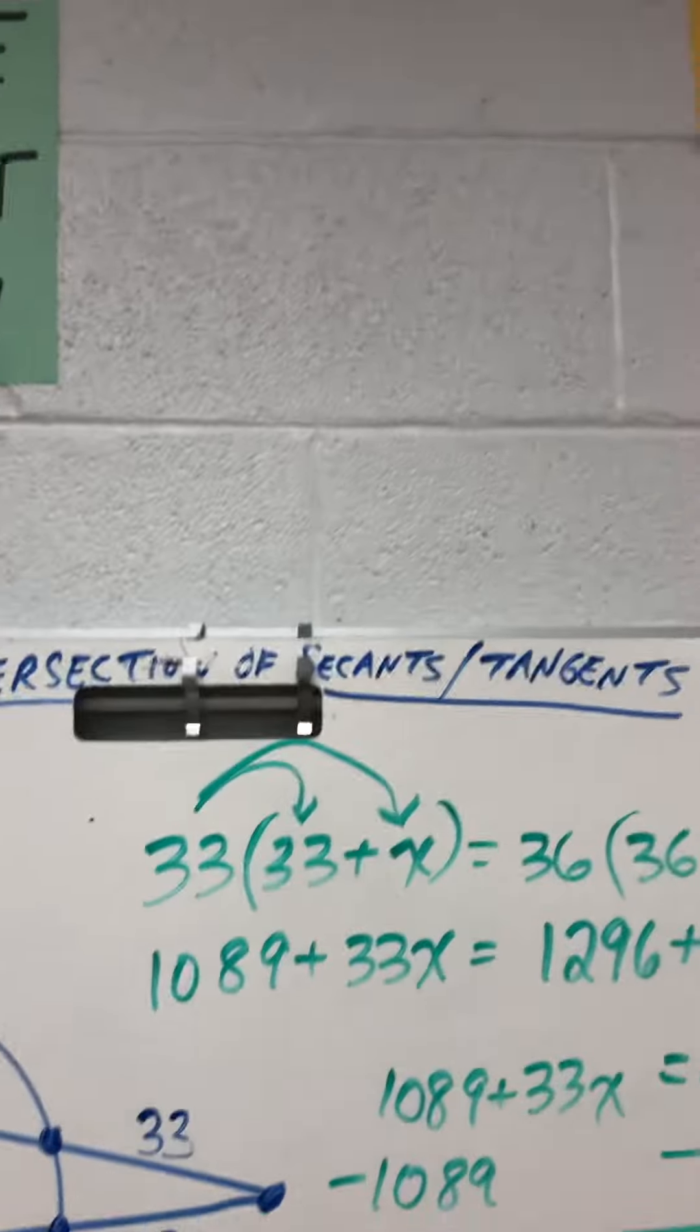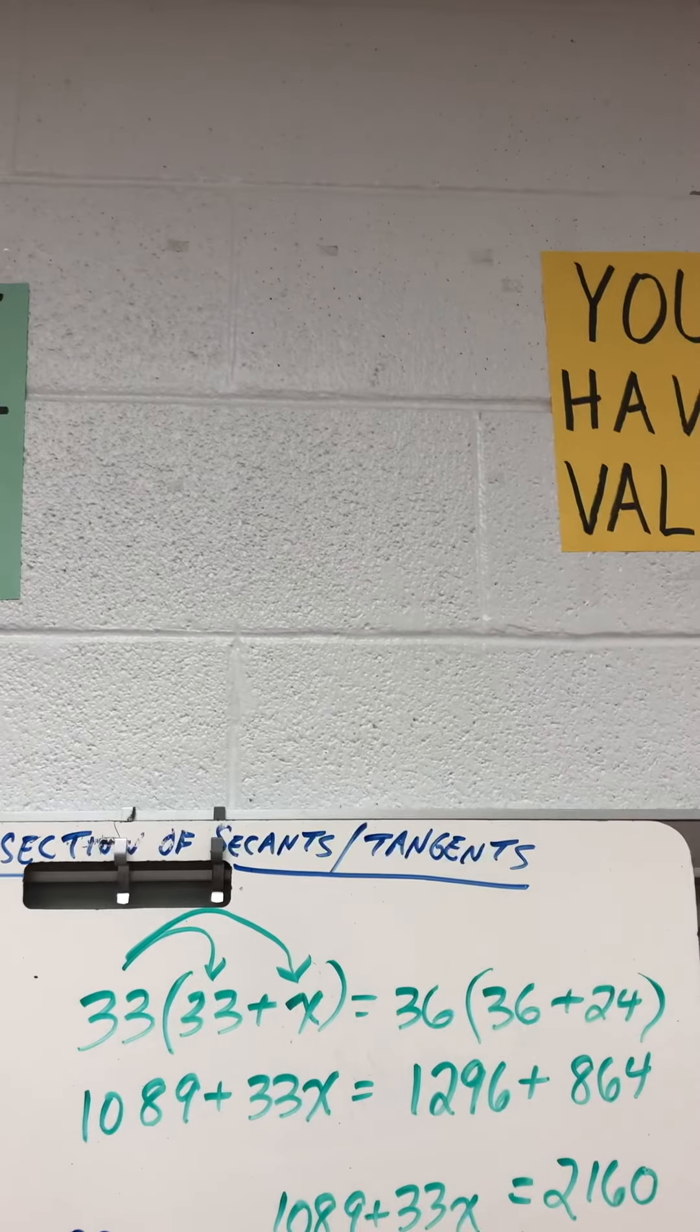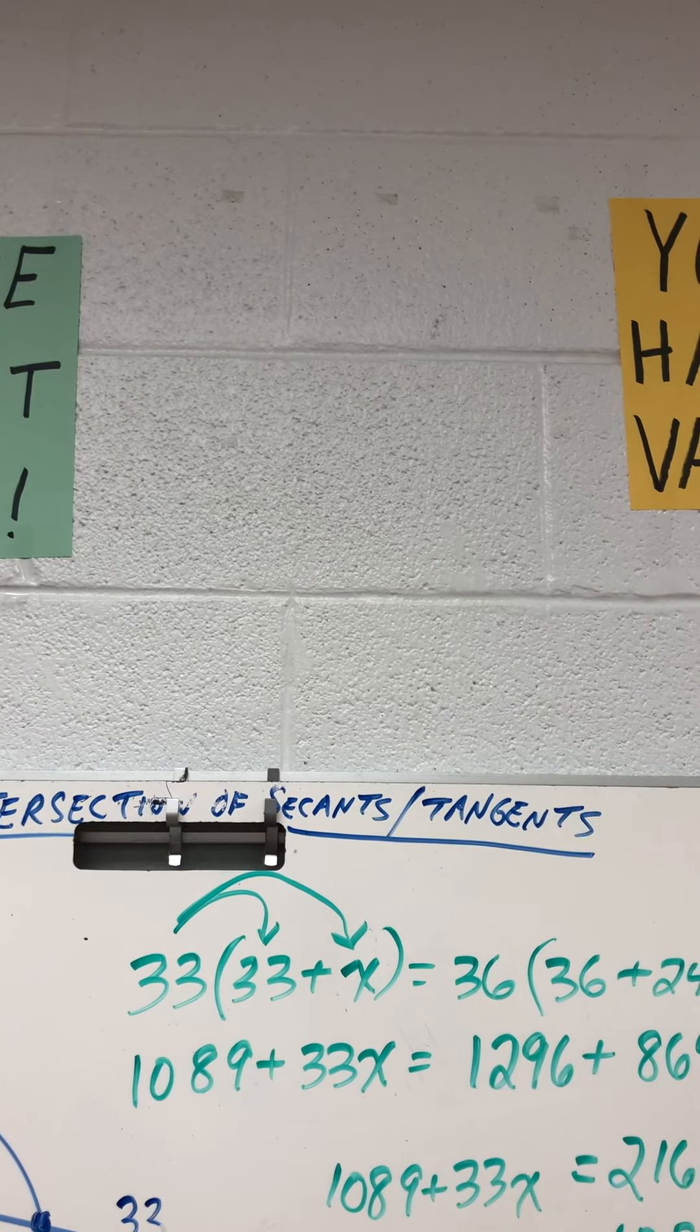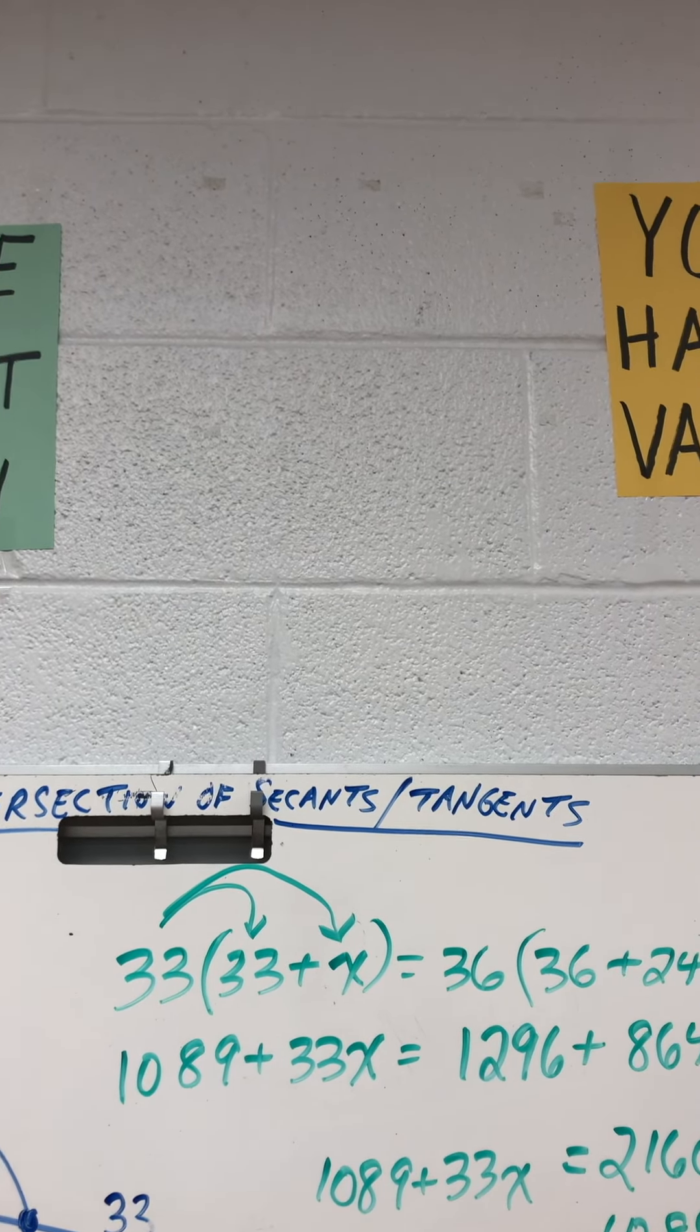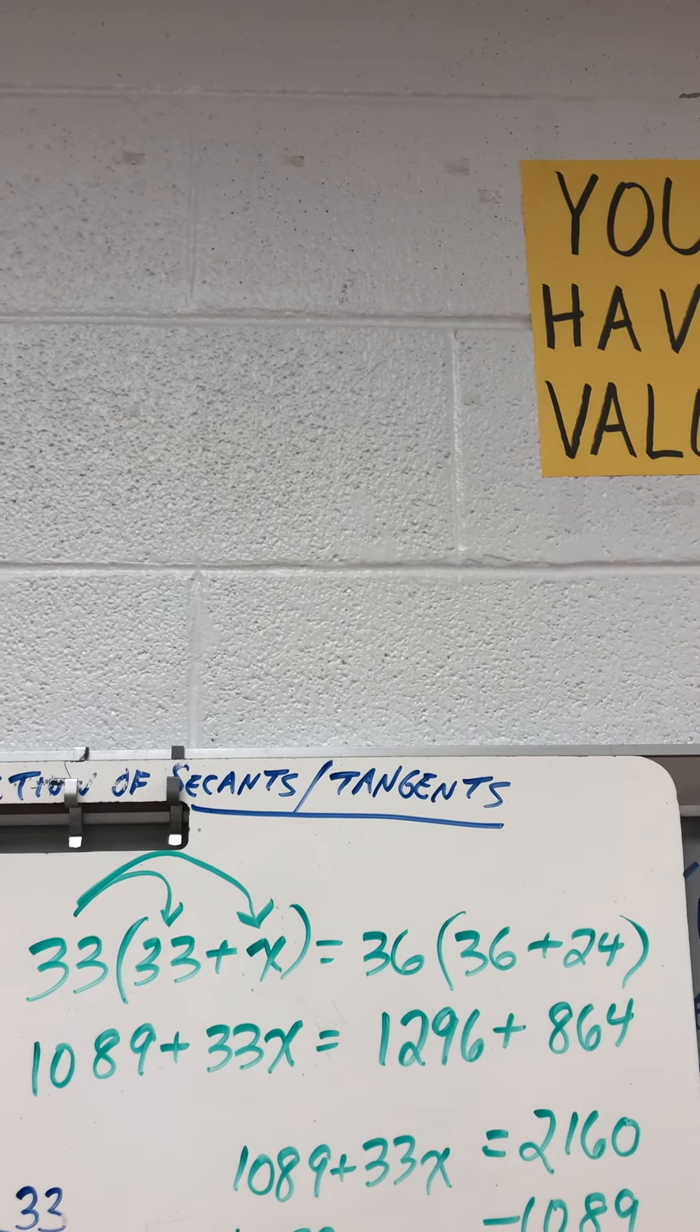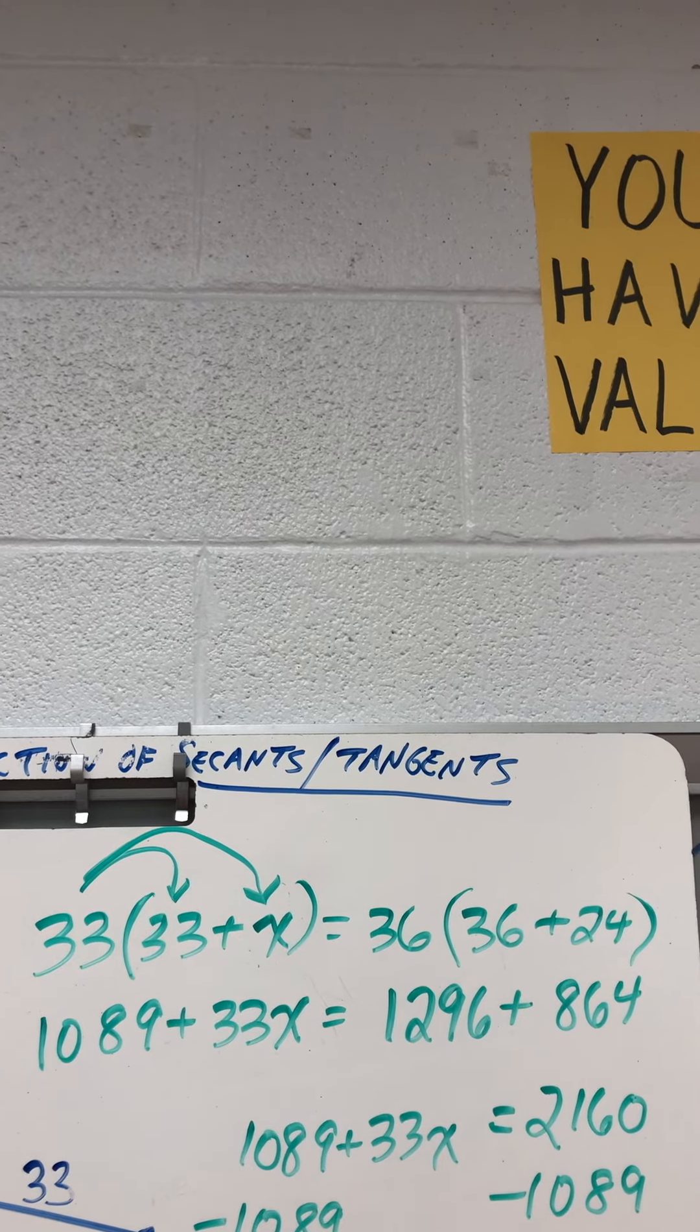So 33 times 33 plus X equals 36 times 36 plus 24. I'm going to distribute. 33 times 33 is 1089 plus 33X. 36 times 36 is 1296. 36 times 24 is 864.